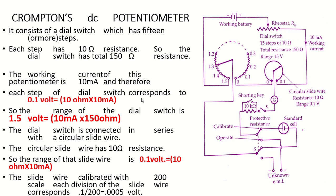Each step of the dial corresponds to 0.1 volt. There are 15 steps, so the total voltage of this large dial switch is 15 × 0.1 = 1.5 volt. Equivalently, 10 milliampere into total resistance of 150 ohm gives 1.5 volt.